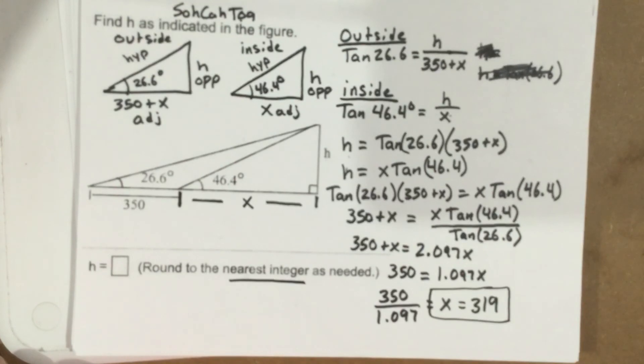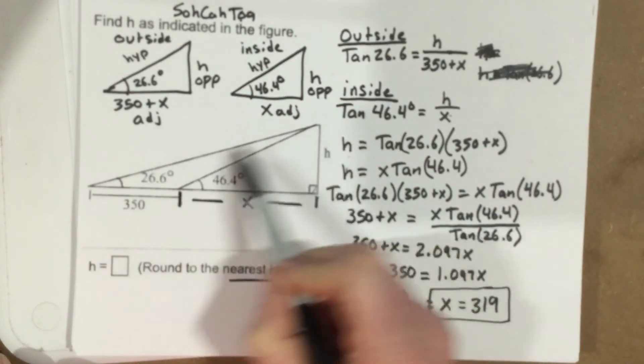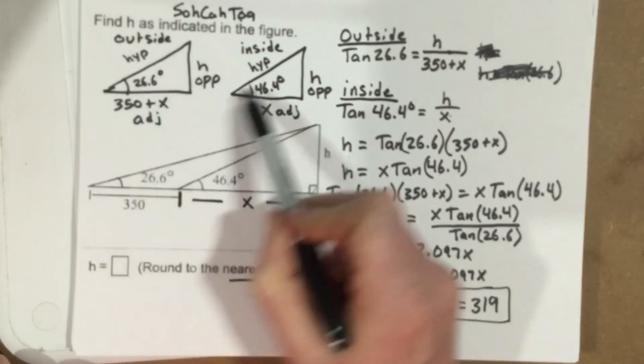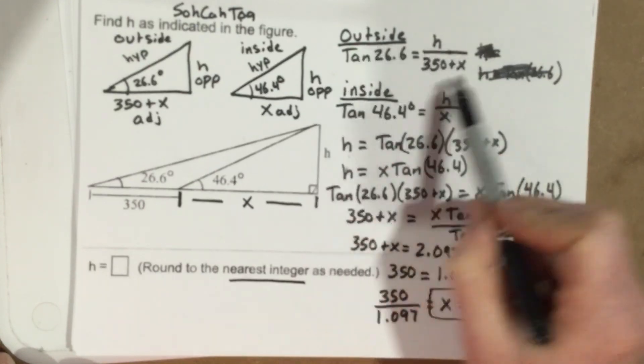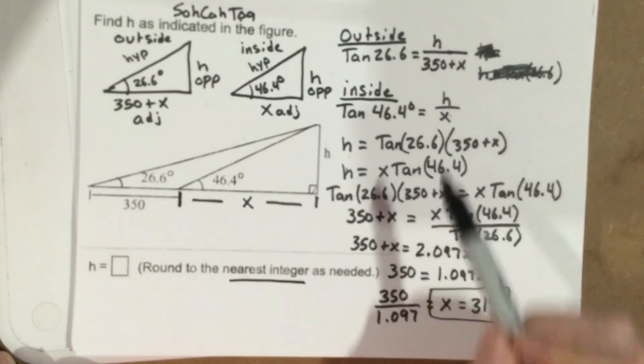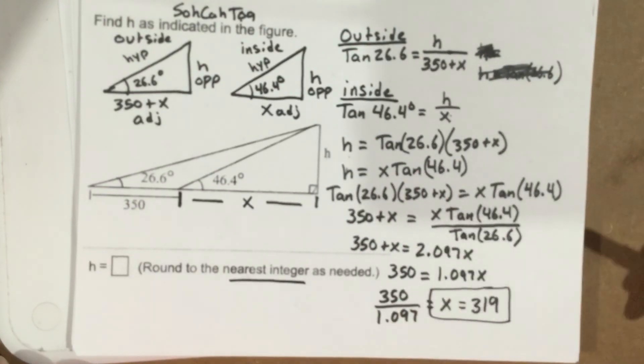So recap it real quick. We want to use the right triangles in this problem, draw them out, write two equations that have the same variables in them, and use systems of equations to solve.